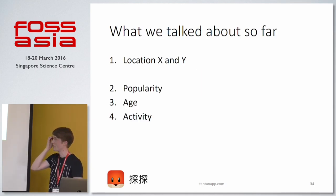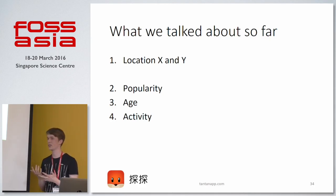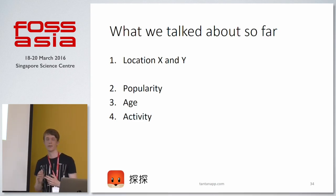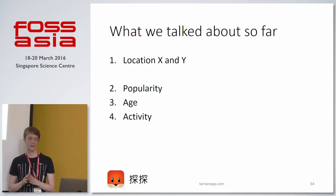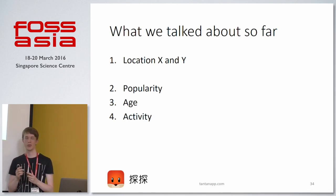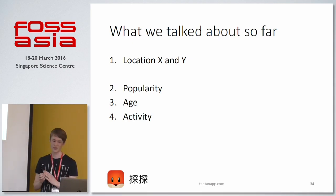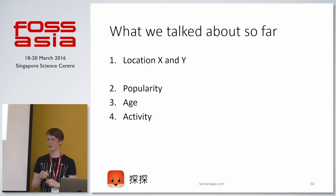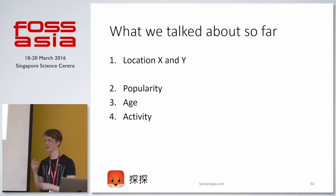Let's take a quick review of what we've looked at so far: first the basic x and y location query, then popularity, age, and activity. But you might be thinking — we talked about two dimensions and three dimensions, where is the fourth dimension? Since I've explained how to add one of these three as the third dimension, you can probably understand my plan for utilizing four dimensions.